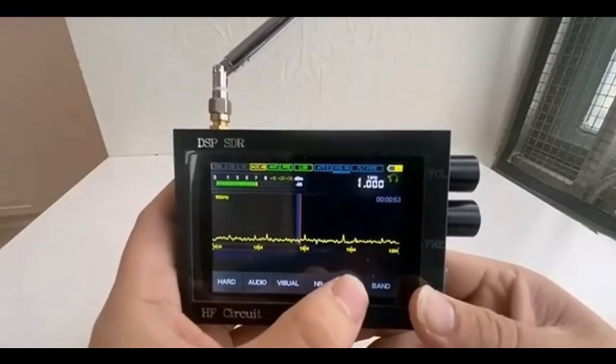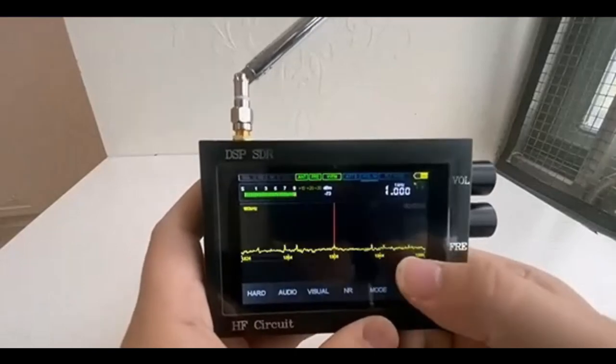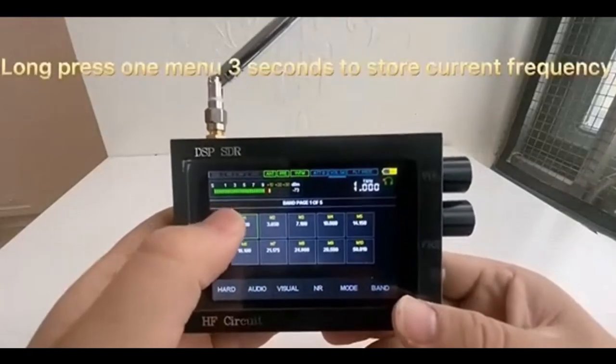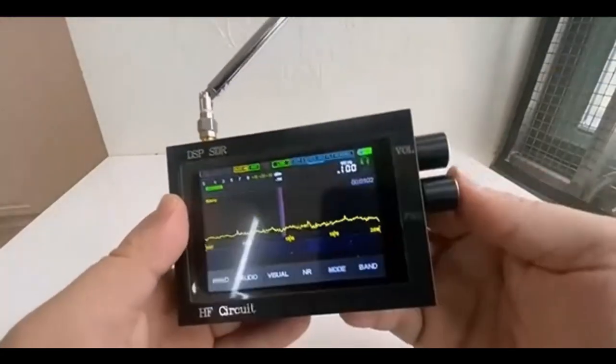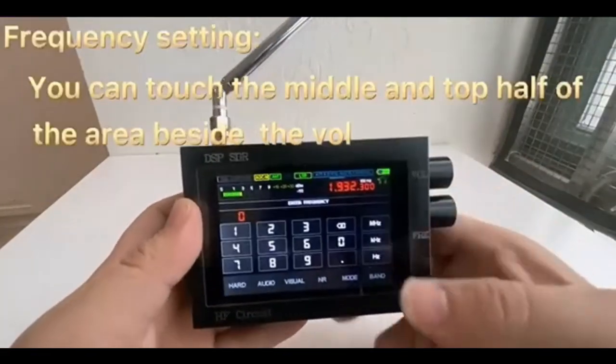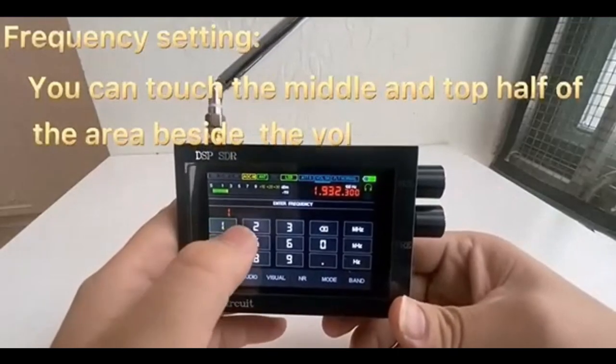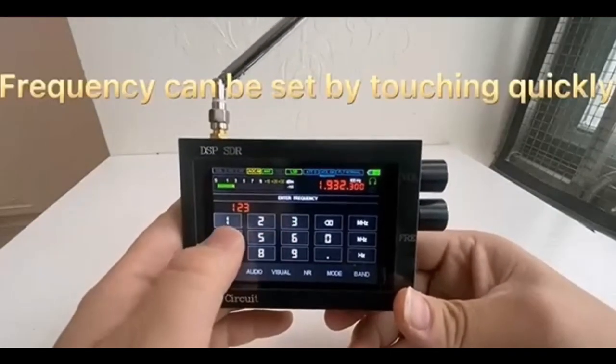The Malachyte 1.10d is a great receiver. It is very sensitive and has excellent selectivity. The graphical spectrum display is very helpful in identifying signals. I would highly recommend this receiver to anyone interested in SDR.